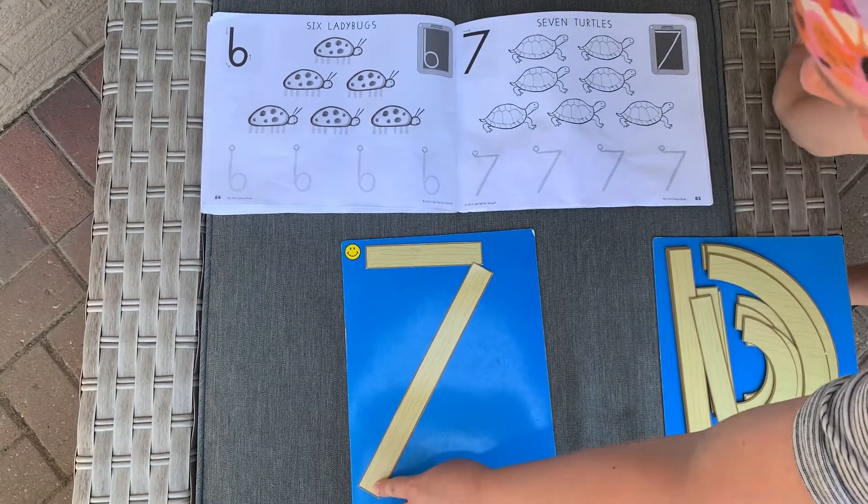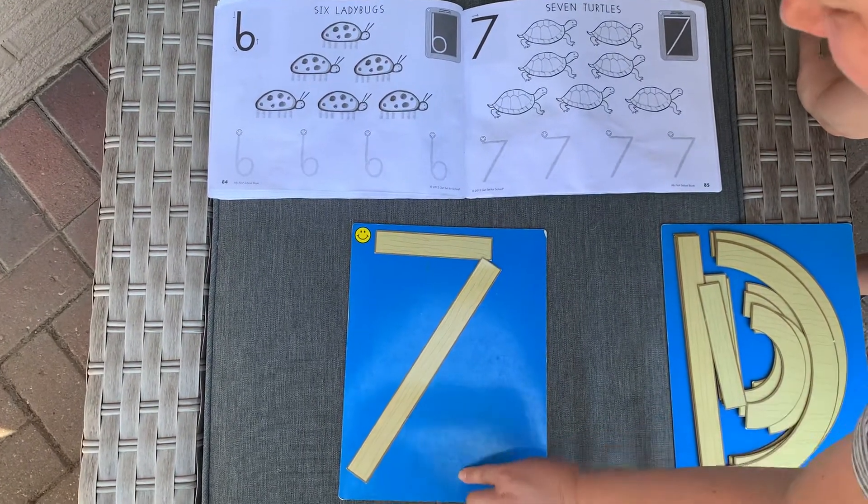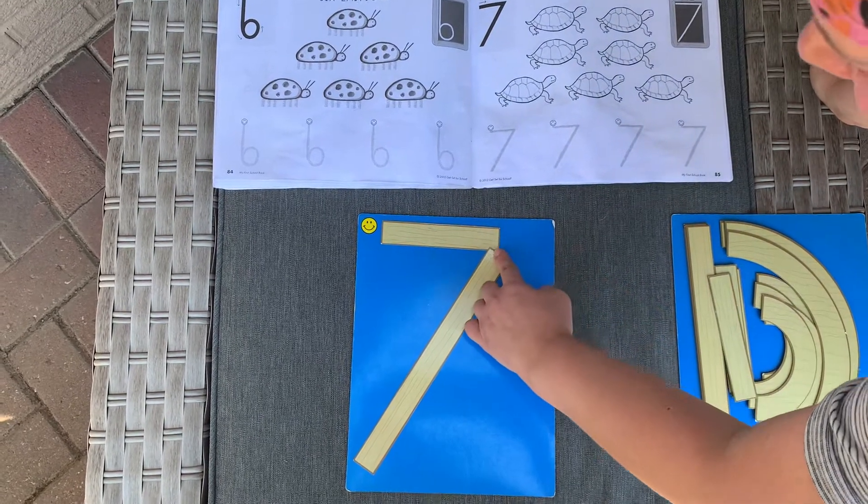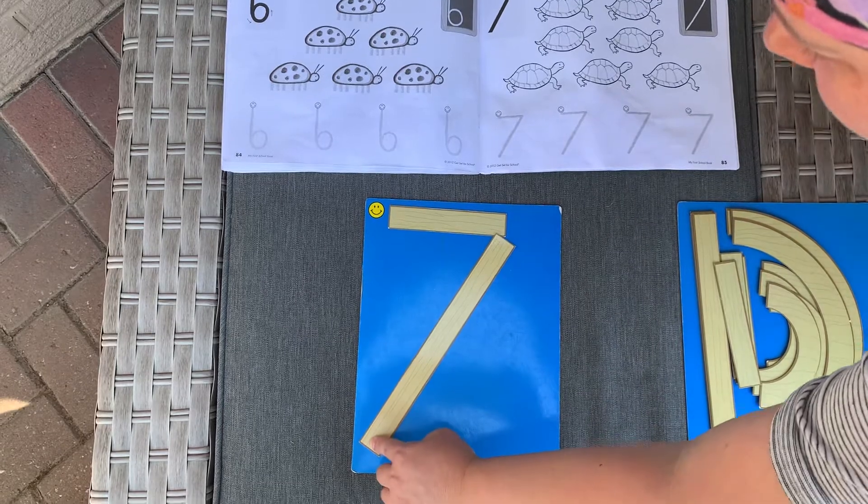Almost like Zahava's letter, letter Z, but we're not going to add the bottom piece. Little line across the top, big line all the way down.